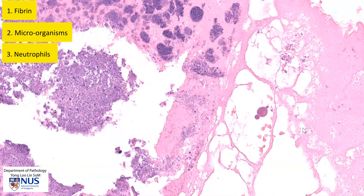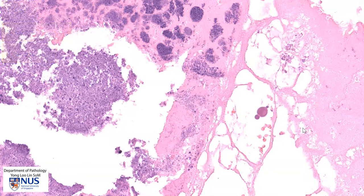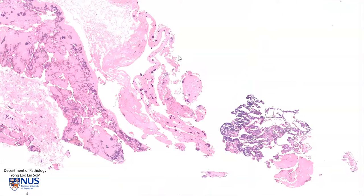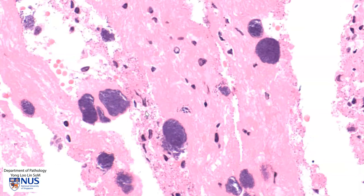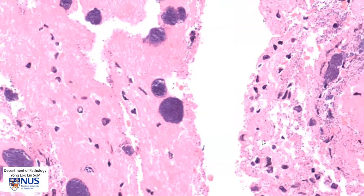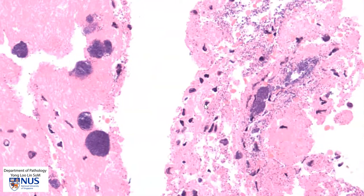In this other example, we are also looking at a vegetation with this pink fibrinous material and blue clumps of bacteria. On higher magnification, again, we can see these clumps of bacteria. There are some very degenerate neutrophils here as well.